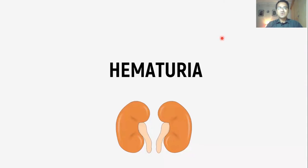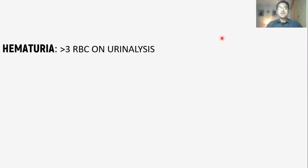Today we are going to talk about the workup of hematuria and all the causes of blood in urine. Hematuria is defined as the presence of greater than three RBCs per high power field on urinalysis. There are a few important points to mention before starting the workup of hematuria.